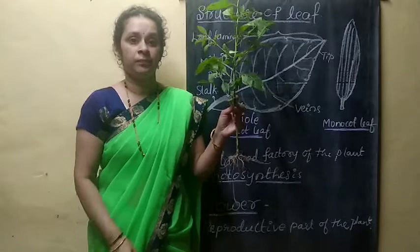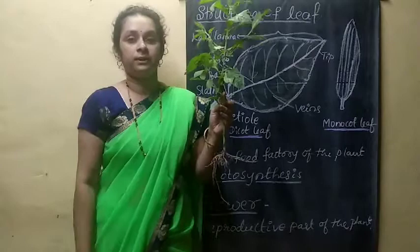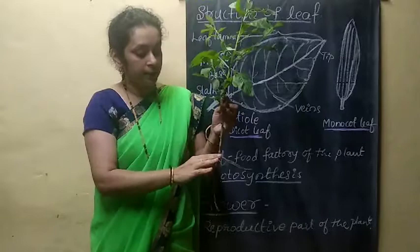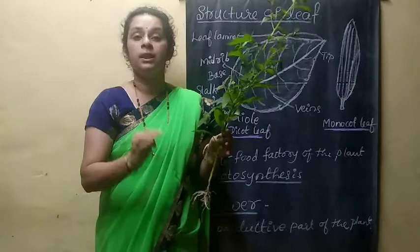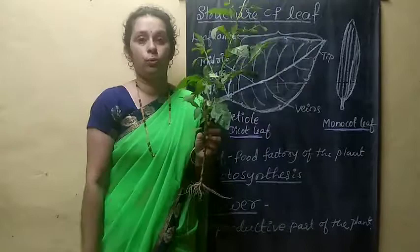A root, stem, branches, leaf, flower, etc. are the parts of a plant. This is the shoot system and this is the root system. Root system is present below the ground and shoot system is present above the ground. Shoot system includes stem, leaves, branches, etc., and root system only includes roots.